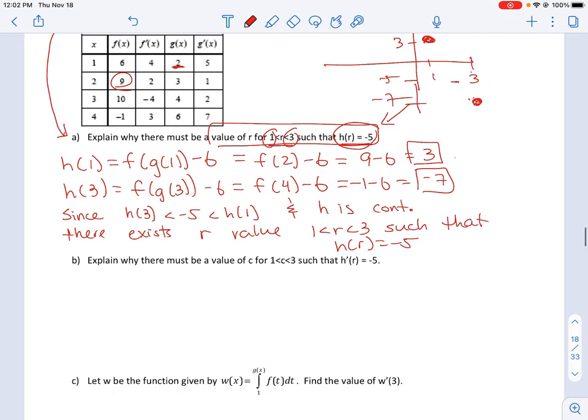The next question says explain why on that same interval it has to be true that the derivative equals negative 5. Think about what theorem asks you to find on an interval where the derivative is a particular value. I'm going to find the slope on this interval. h(3) minus h(1) over 3 minus 1. I found these values in part A, so this is negative 7 minus 3 over 2, which gives me negative 5.